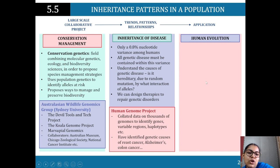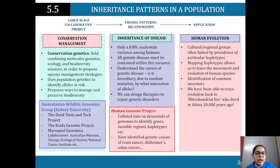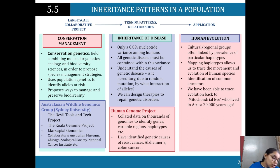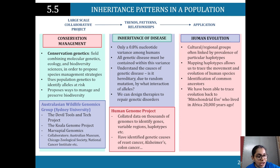For human evolution, cultural and regional groups are often linked by the prevalence of particular haplotypes. Mapping haplotypes allows us to trace the movement and evolution of the human species and identify common ancestors. This includes tracing back to Mitochondrial Eve, who lived in Africa approximately 200,000 years ago.